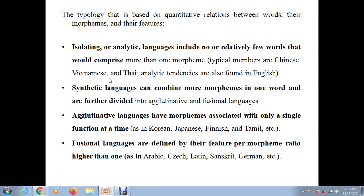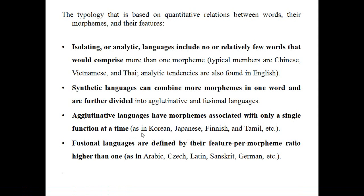Isolating or analytic languages include relatively few words that comprise more than one morpheme. Typical members are Chinese and Thai; analytic tendencies are also found in English. Synthetic languages can combine more morphemes in one word and are further divided into agglutinative and fusional languages. Agglutinative languages have morphemes associated with only a single function at a time — examples include Korean, Japanese, Finnish, and Tamil. Fusional languages are defined by their feature-per-morpheme ratio being higher than one — examples are Arabic, Latin, Sanskrit, and German.